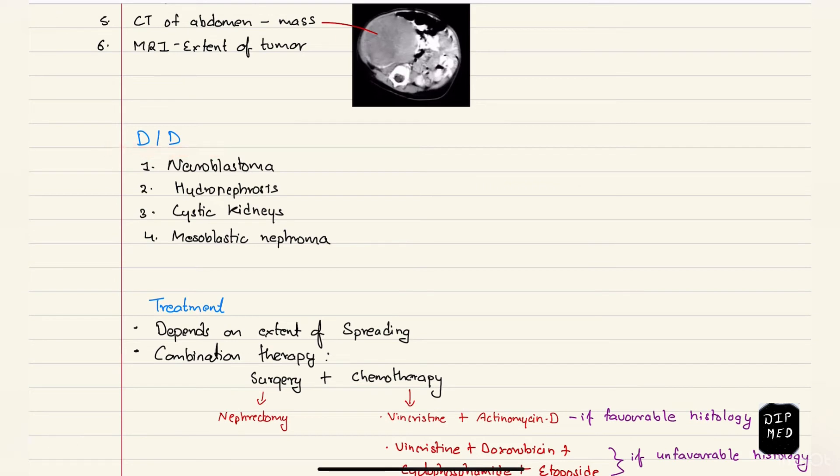The differential diagnosis of Wilms tumor includes neuroblastoma, also an abdominal malignancy of children. Unlike Wilms tumor, it arises from the neural crest cells and usually crosses the midline.